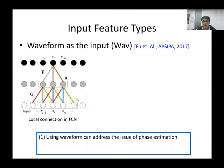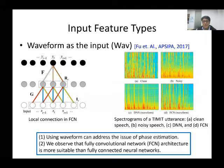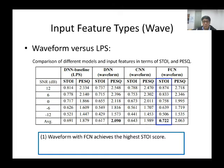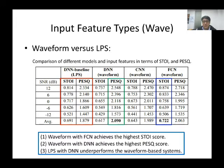Next, we tried to directly enhance speech in the time domain. In 2017, we proposed using FCN to do this work, with the motivation of obtaining more accurate phase information. We also noted that FCN performs better than fully connected neural networks. From the results, FCN achieves the highest STOI scores, and DNN achieves the highest PESQ score. The log-power spectral features with DNN underperform these two waveform-based speech enhancement systems.